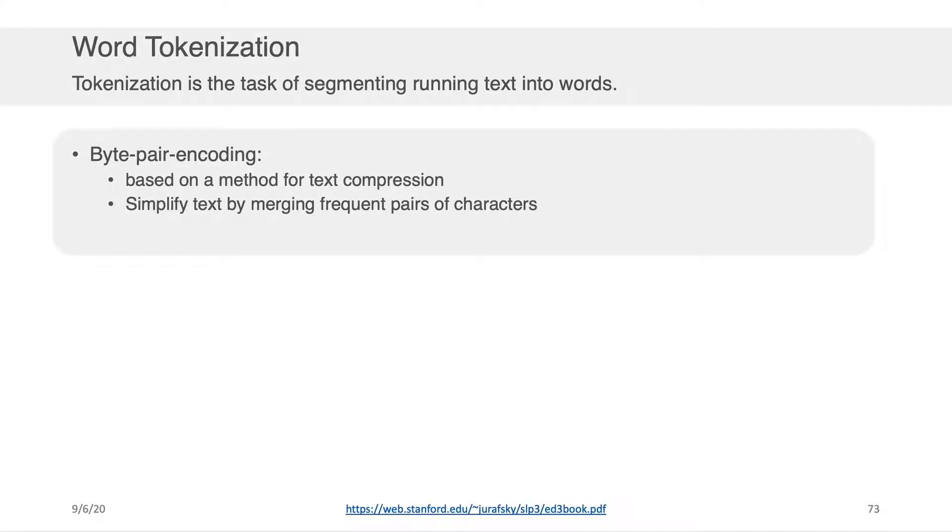So both the Penn Treebank approach, as well as the simple white space split, are rule-based algorithms. We write out a regular expression, the regular expression parses the text, and it separates things out into tokens. There's been a lot of interest more recently in using data-driven approaches to automatically tokenize the text without writing out any rules at all. In fact, some of the more powerful contemporary natural language processing approaches such as BERT use a data-driven approach for the tokenization. One of those data-driven approaches that I'd like to discuss here is byte-pair encoding.